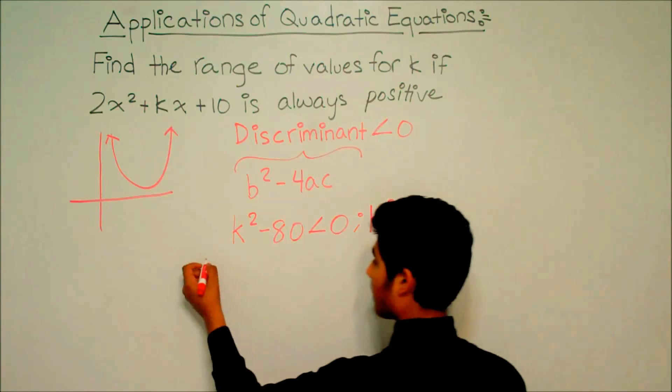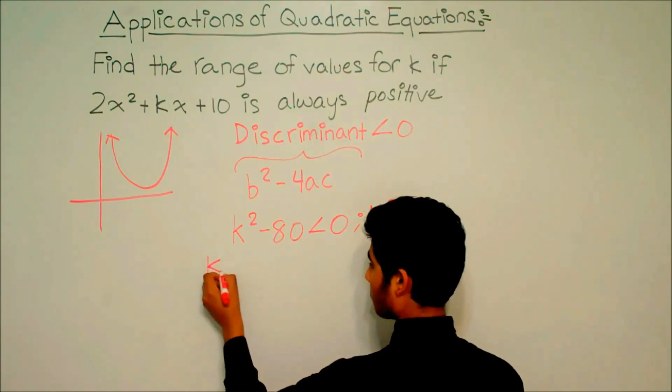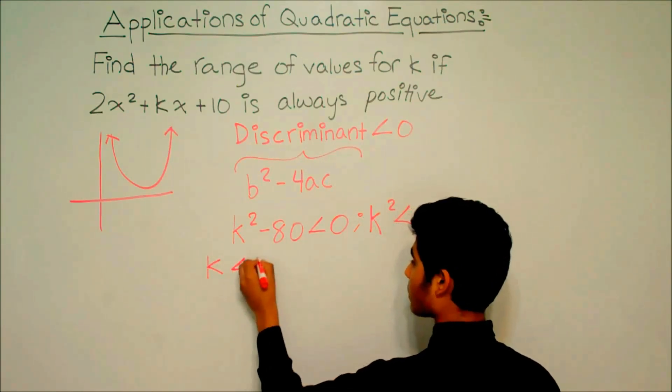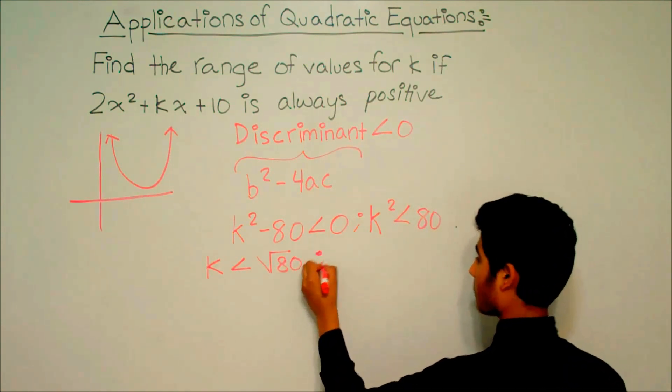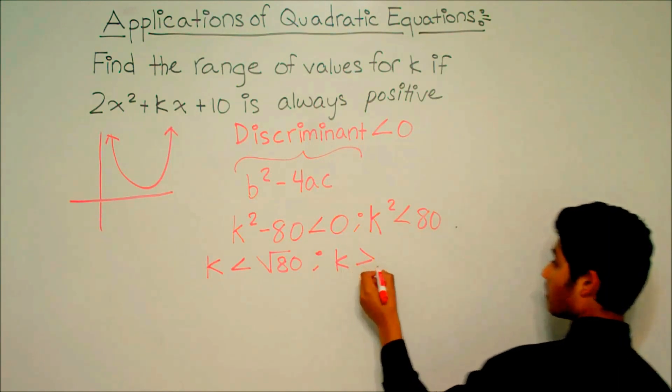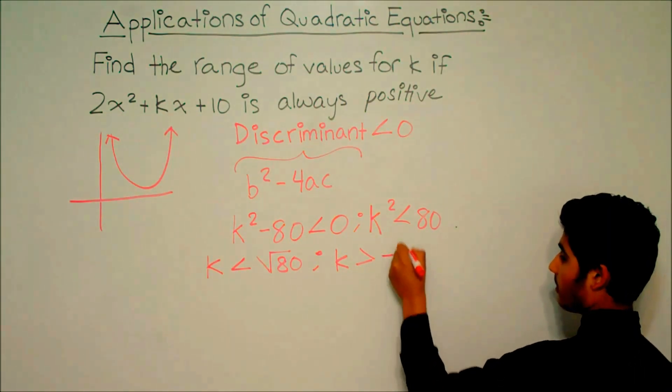So that means k is less than the square root of 80, and k is greater than the negative square root of 80.